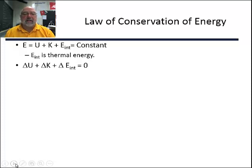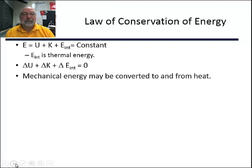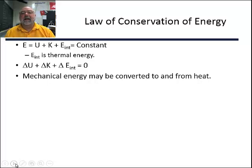The changes in those energies add up to zero. If potential energy goes up, kinetic energy and thermal energy must go down — or at least one of them must go down. So mechanical energy may be converted to and from heat. In a car, the engine uses heat to produce mechanical energy, and friction takes mechanical energy and turns it into heat.